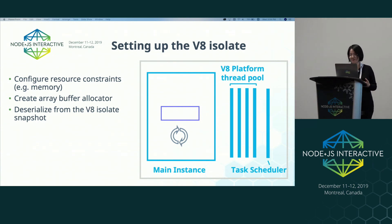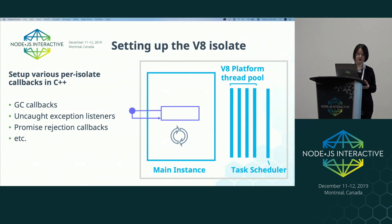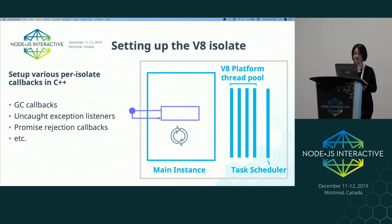We'll cover snapshots later. Then we'll set up several per-isolate callbacks in C++, but most of them are not ready to be called at this point because they will have to work with JavaScript callbacks initialized later. These include the garbage collection callbacks, uncaught exception listeners, promise rejection callbacks, etc.